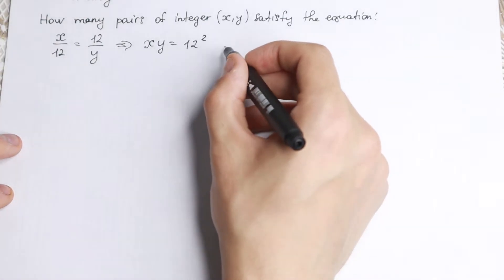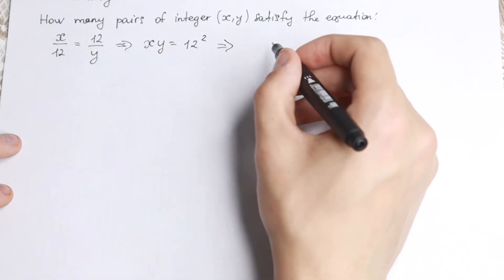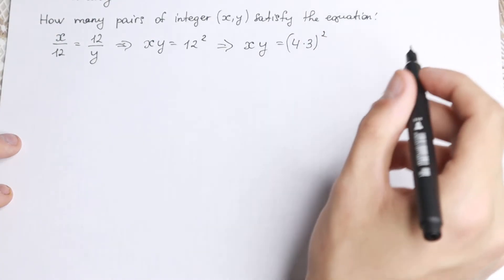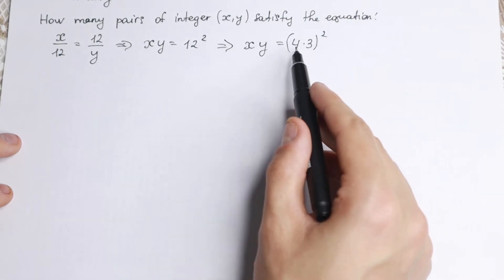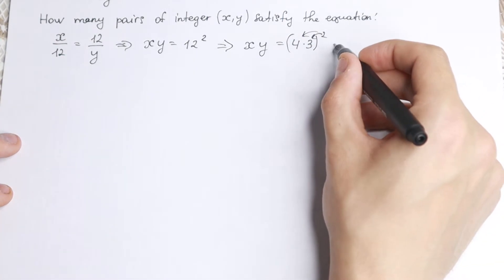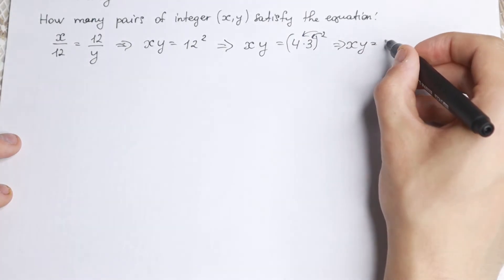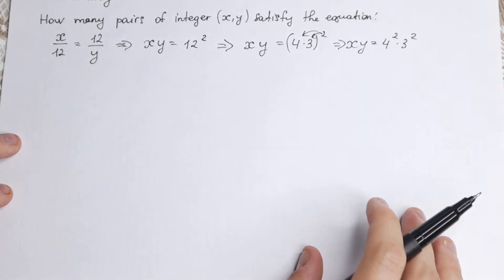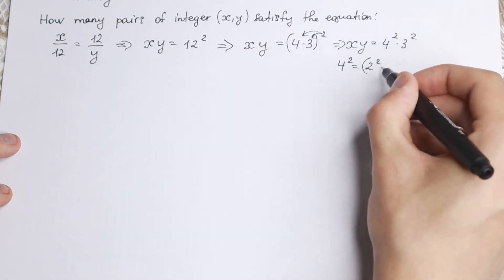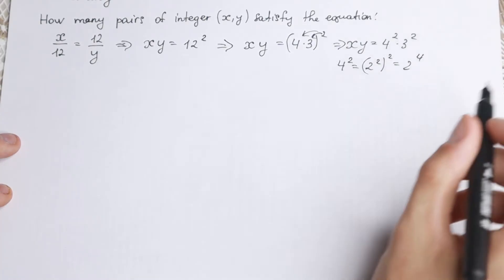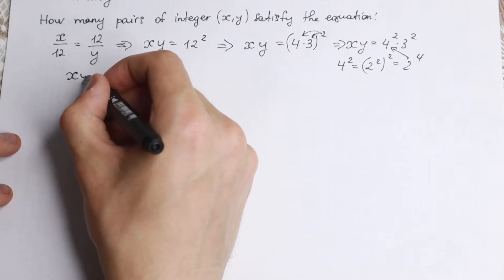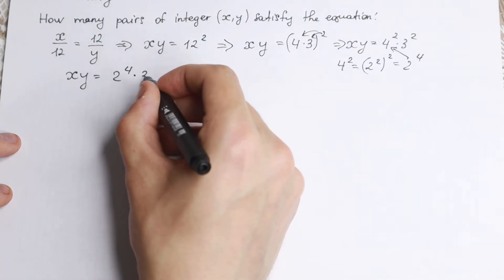So we need to use a little trick here. I want to write 12 as 4 times 3, so we'll have x times y equal to (4 times 3) all raised to the square power. I want to write this as 4 squared times 3 squared. Then I'll rewrite 4 squared as 2 to the fourth power, since 4² = (2²)² = 2⁴. So as a result we have xy equal to 2 to the fourth times 3 squared.